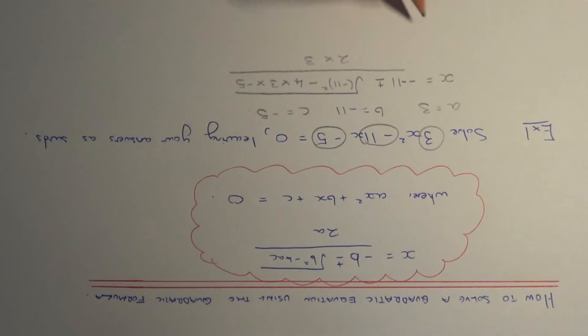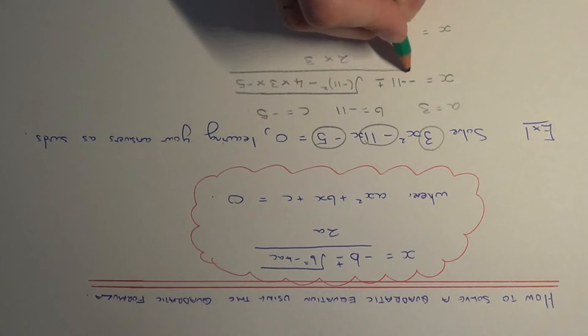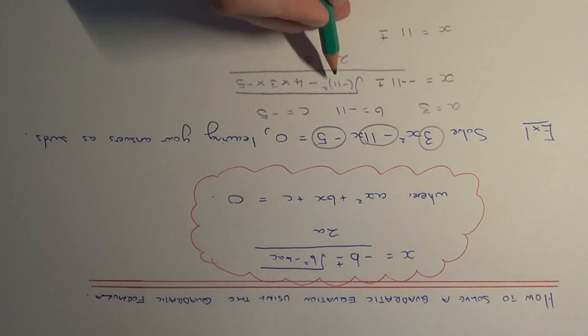Let's simplify this a little bit more. Minus minus 11 is plus 11. Plus or minus the square root of minus 11 squared, which is 121. And let's work this bit out next.